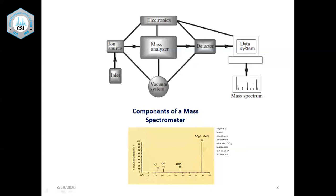The data system acquires, processes, controls, and stores data. The output is a mass spectrum. For example, a simple mass spectrum of carbon dioxide shows a molecular ion at m/z 44 and fragment ions at m/z 28, 16, and 12, corresponding to CO⁺, O⁺, and C⁺ respectively. You get both molecular weight information and structural information from a mass spectrum.